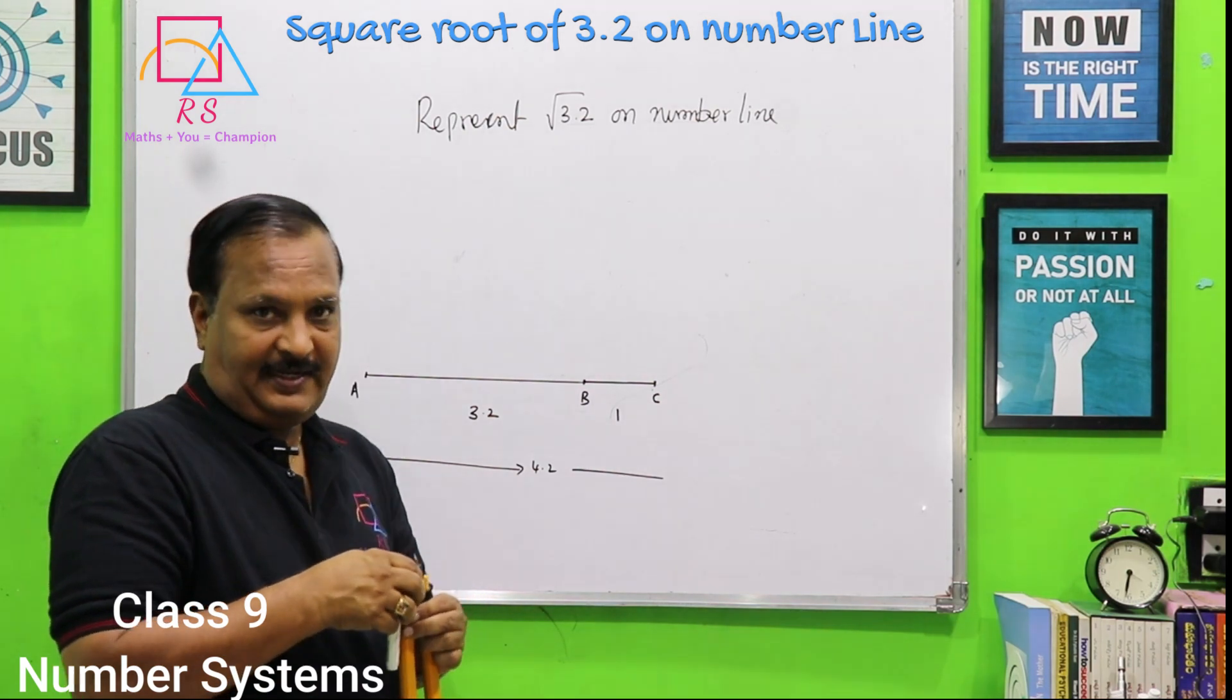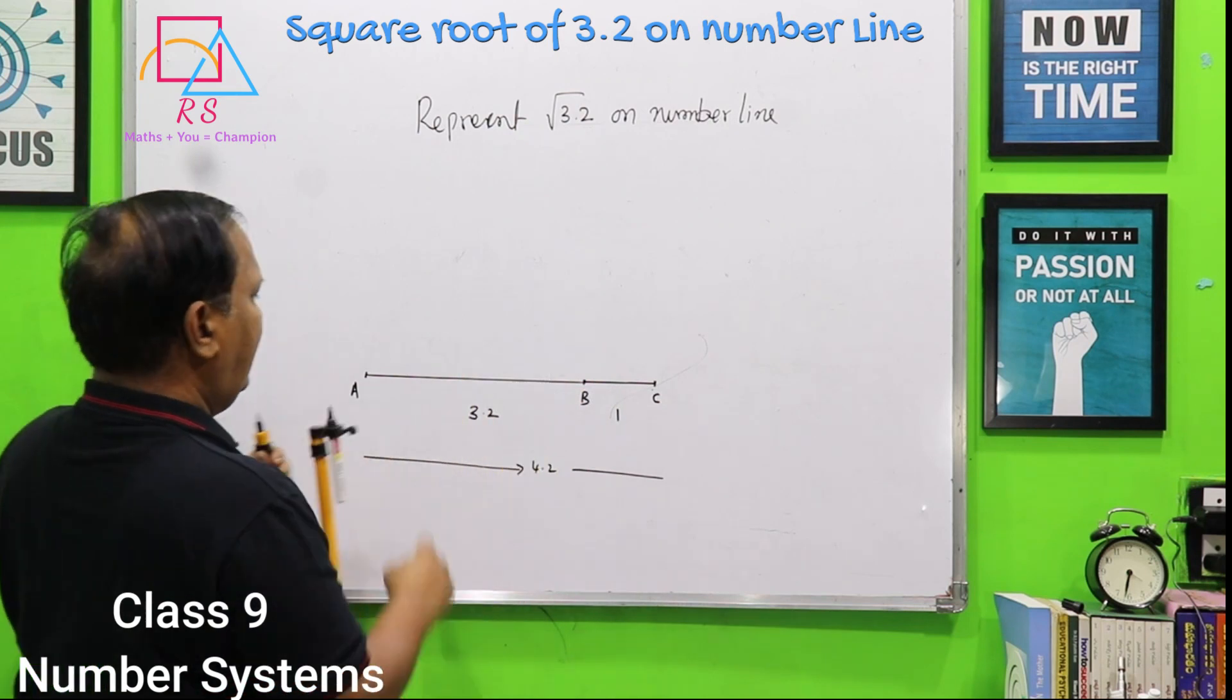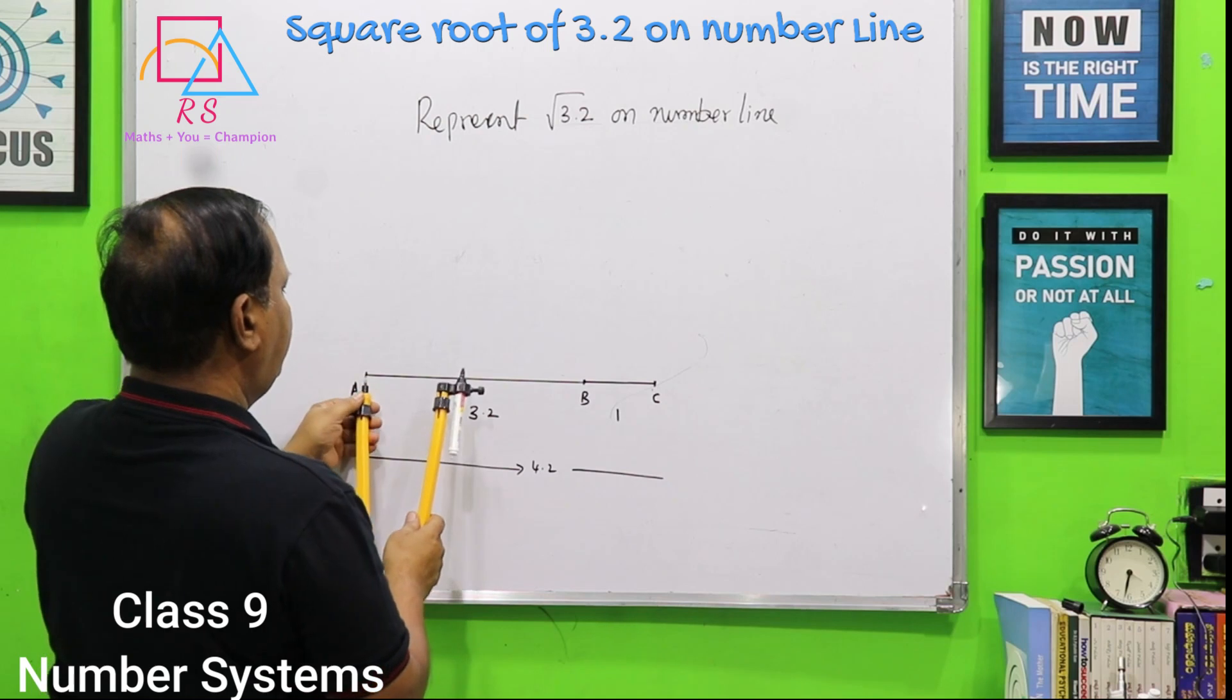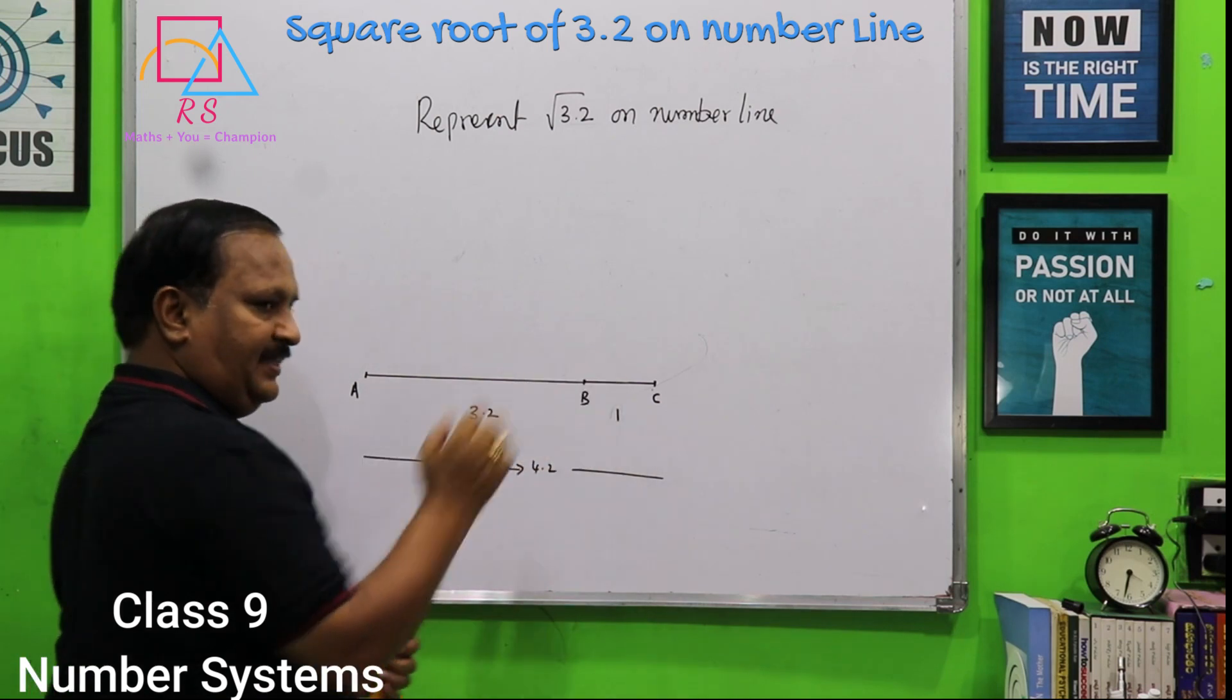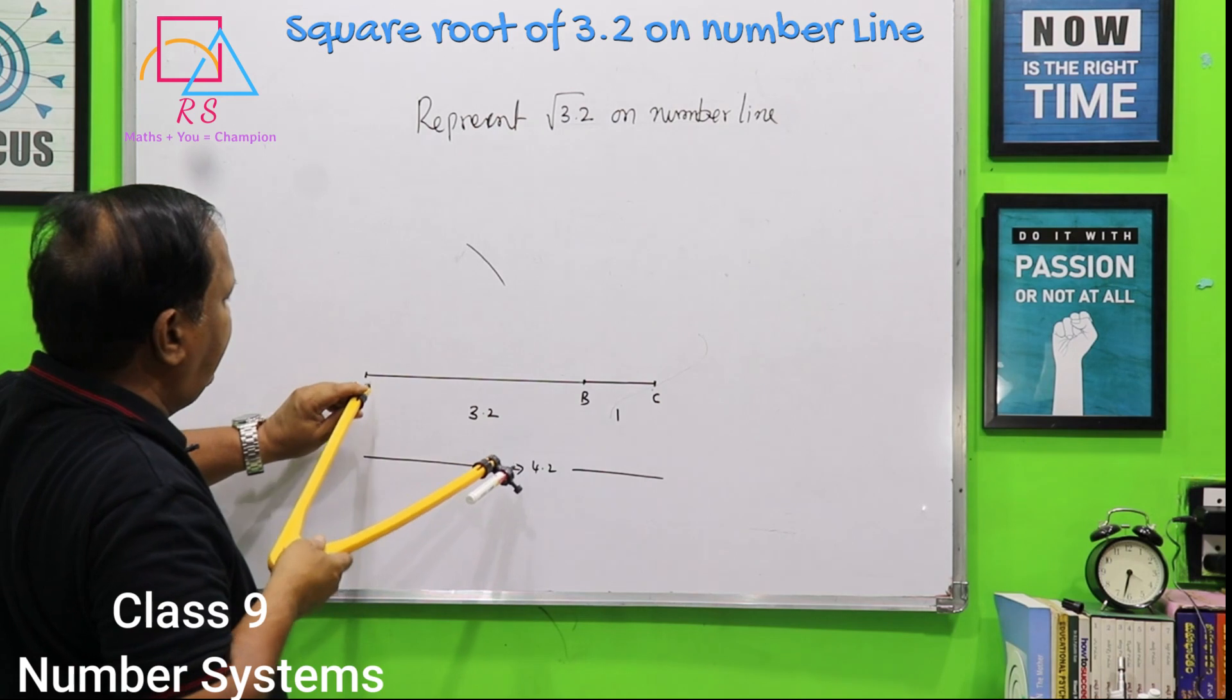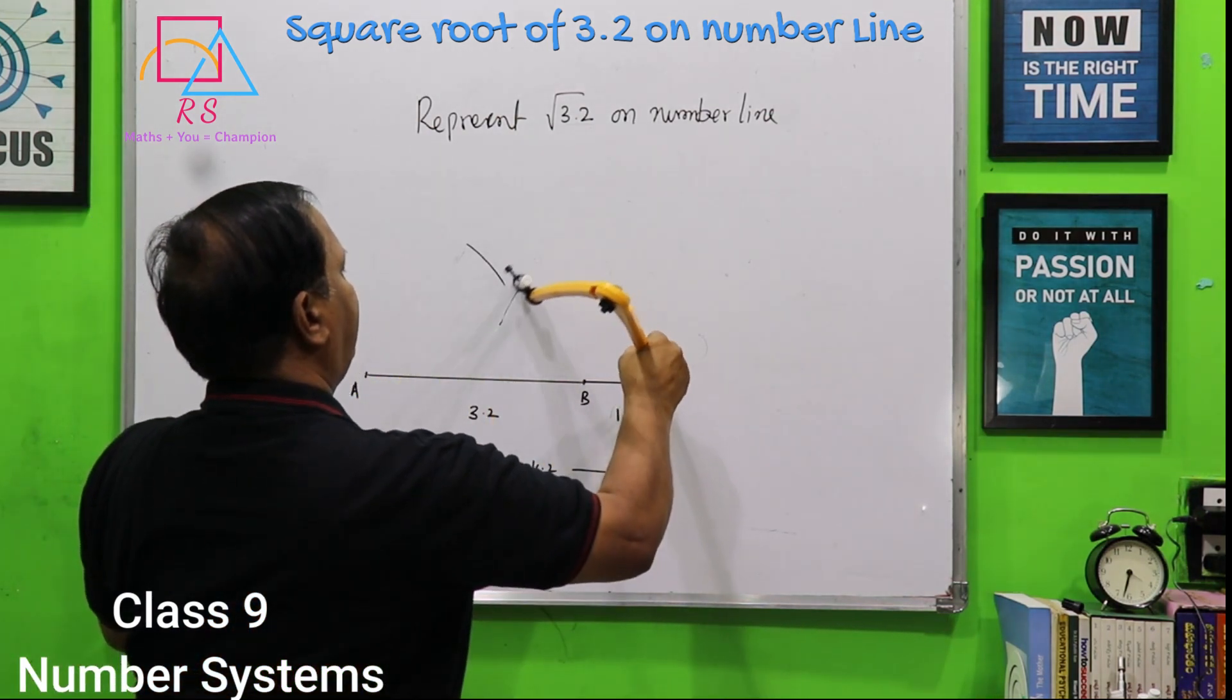To find out perfectly the midpoint, you should always draw perpendicular bisector. For that, you have to take compass. I will make it tight. And for AC perpendicular bisector, you have to take more than half of AC as radius. Then draw an arc from above and from below. And again, from C with same radius, arc intersect karna hai.